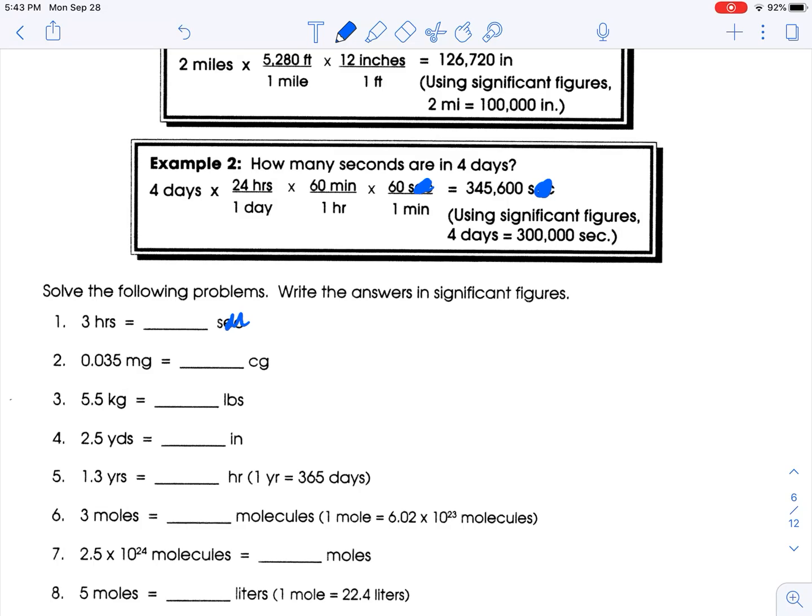Three hours - I need to go from hours to seconds. So I don't know how many seconds are in an hour, so I need to break it down into smaller increments. One hour I know is 60 minutes, and then in one minute I know that is 60 seconds. So 3 times 60 times 60 is 10,800.